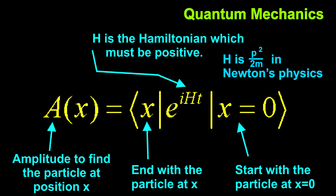This is standard quantum mechanics notation. It shows how to calculate the overlap between two vectors in a Hilbert space. It gives the amplitude to find the particle at location x, given that it started at the origin. The h in the expression is the Hamiltonian, which is the energy of the particle in quantum mechanics. It's the thing that must be positive.